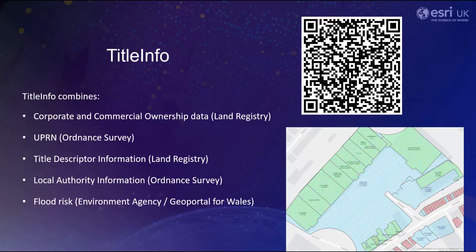If you'd like to learn more about Title Info, please scan the QR code on the screen or click the link in the video description below to read through our story map, which will explain how the dataset is used in more detail. If you'd like to trial Title Info you can do so for 30 days if you do not already have the data, and the link for the trial can also be found in the video description.